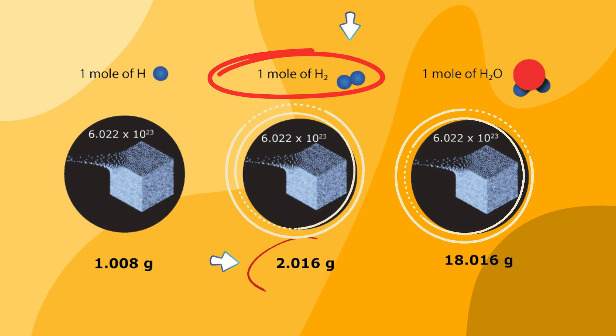One mole of hydrogen molecules contains 6.022 into 10 to the power of 23 hydrogen molecules equals 2.016 gram.